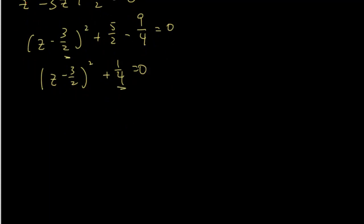So going back, so take this to the other side. So z minus 3 over 2 is equals to the square root of negative 1 over 4. So therefore,